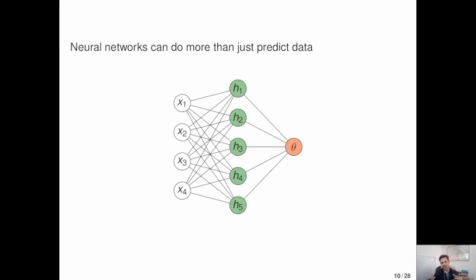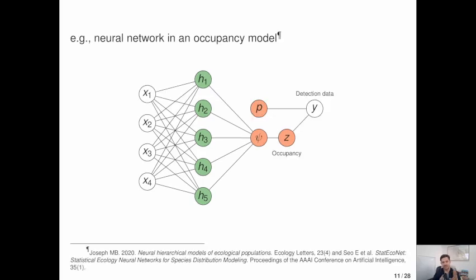But neural networks can do a lot more than just predict data. For example, you might imagine a neural network that instead of predicting some observable data predicts some unobservable parameter theta. And we can give a concrete example here by injecting a neural network into an occupancy model. So here we're actually predicting the probability of occupancy psi using a neural network. And this neural network can be a part of an occupancy model. And you end up with something like a neural occupancy model that gives you the function approximation of a neural network, but the observation model corresponding to an occupancy model. So you can account for imperfect detection.